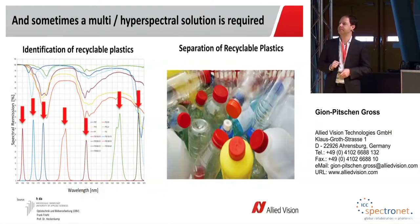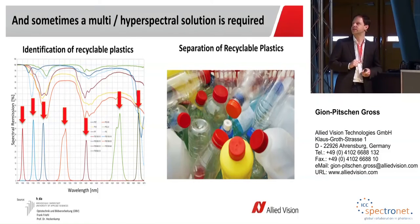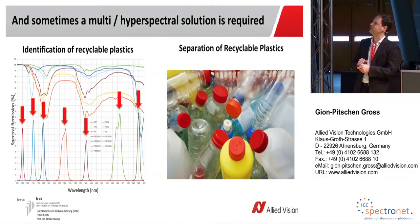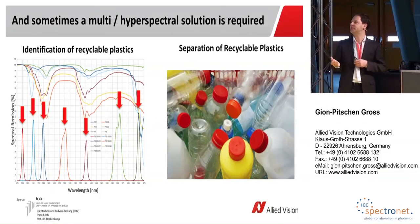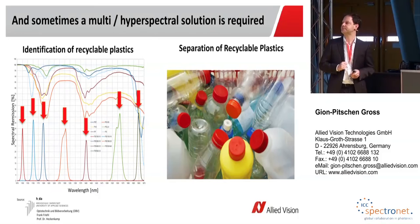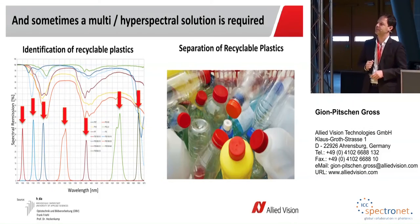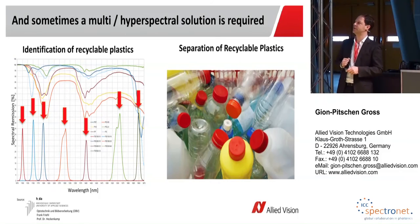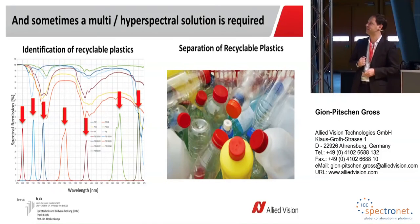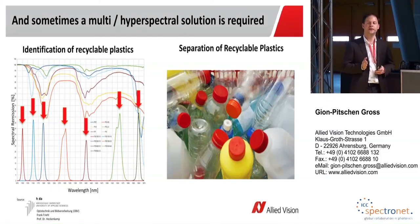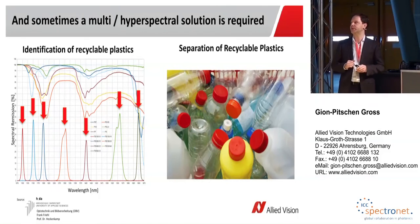Consider, for example, the spectral curves of different plastics: polyester, PVC, PP, polyethylene, and PS. Here it would not be possible to use just one filter to differentiate them — the curves are too similar. However, using seven filters, we are able to distinguish quite many of the plastics. So, as I mentioned, it is always very application-specific: how many filters you need, whether one filter is enough, whether you need a multispectral solution, or whether you have to go for a full hyperspectral solution.